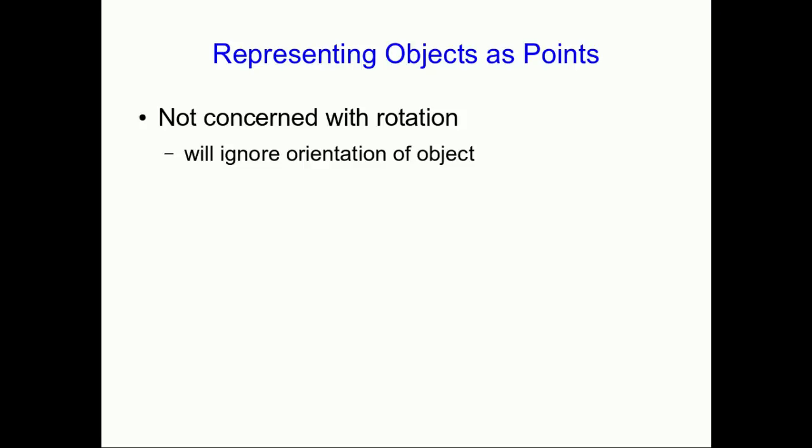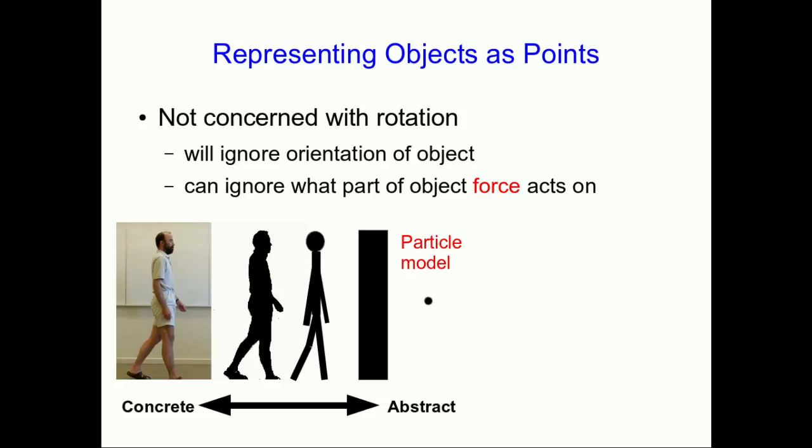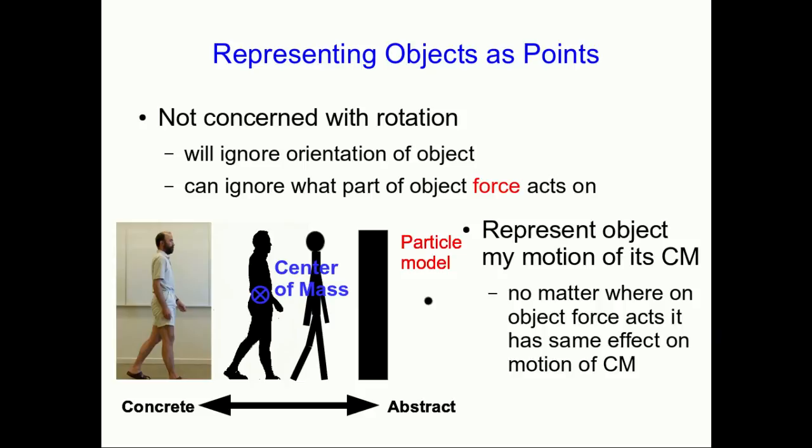So because we're not concerned with rotation, or in other words we ignore the orientation of objects through the rest of this course, we can ignore what part of an object a force acts on. The reason is that no matter where a force acts on an object, it has the same effect on the translational motion of the object. Where it acts only affects the rotational motion.